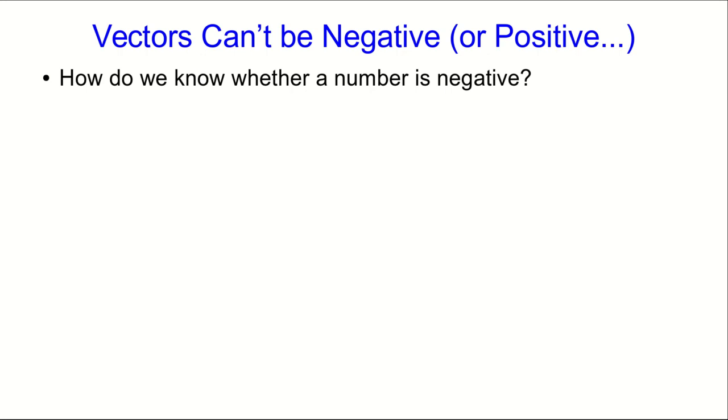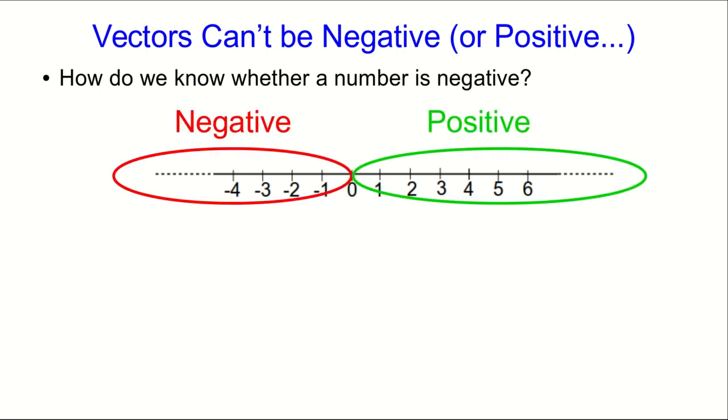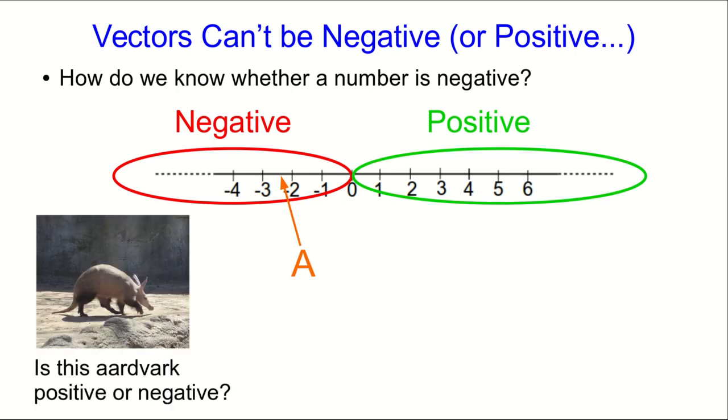How do we know whether a number is negative or positive for that matter? Well, the simple answer is we figure out where that number lives on the number line. If it lives to the left of the zero on a number line, then it's negative. And if it lives to the right of the zero on the number line, then it's positive. And so if I just give you some number a, and I tell you where it lives on the number line, then you can tell me whether it's positive or negative. You can see that this number a is apparently negative. Okay, well, is this aardvark positive or negative? Well, I hope you're saying that's ridiculous, Jeff. Aardvarks don't live on number lines. They live in savannas and brushlands of Africa. And so it's a totally meaningless question to ask whether an aardvark is positive or negative.